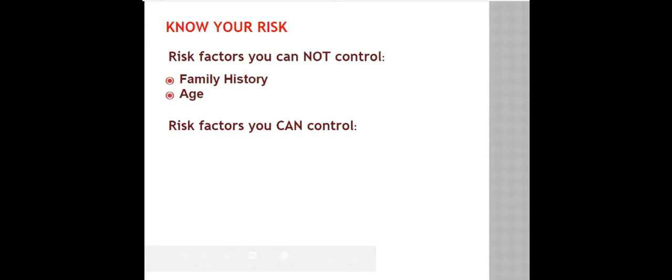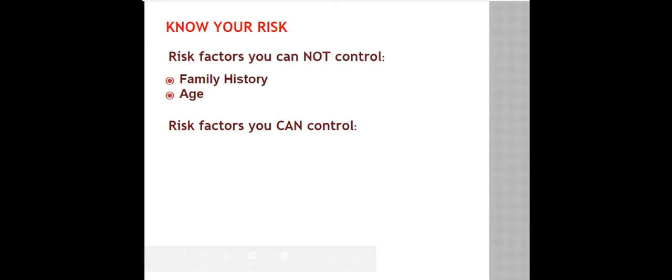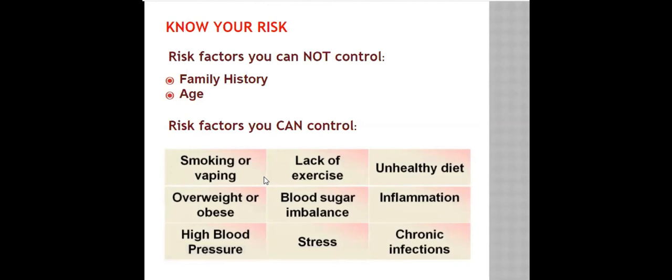You can control things like smoking and vaping. We'll go through all of these on a separate slide. Lack of exercise, unhealthy diet, obesity or overweight, blood sugar imbalances, inflammation, high blood pressure, stress, chronic infections. These are all things that we can control.